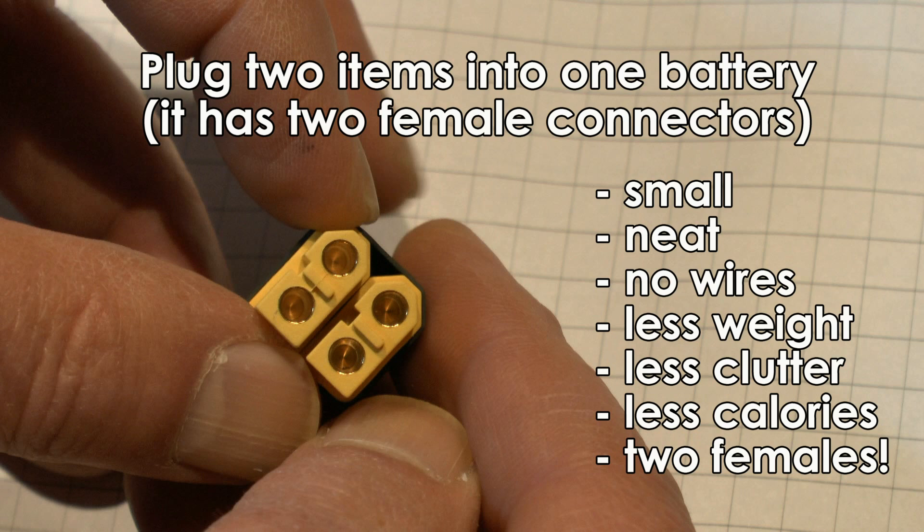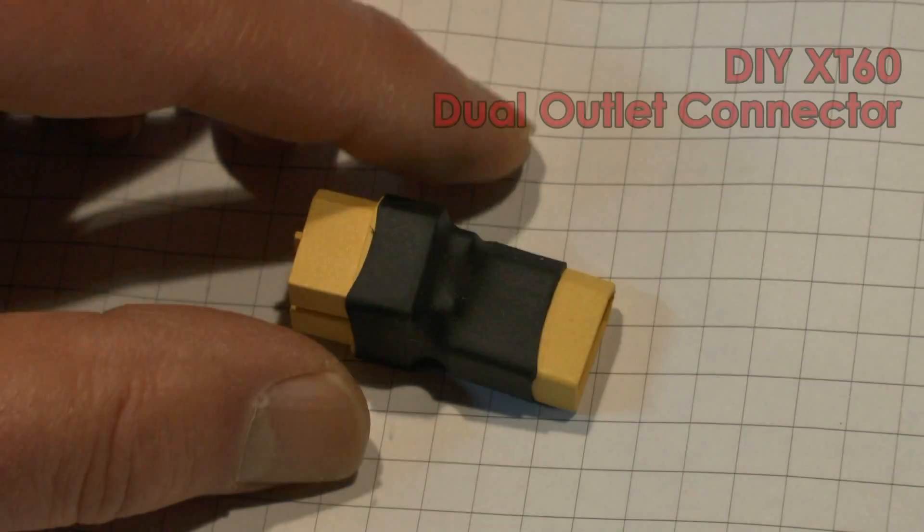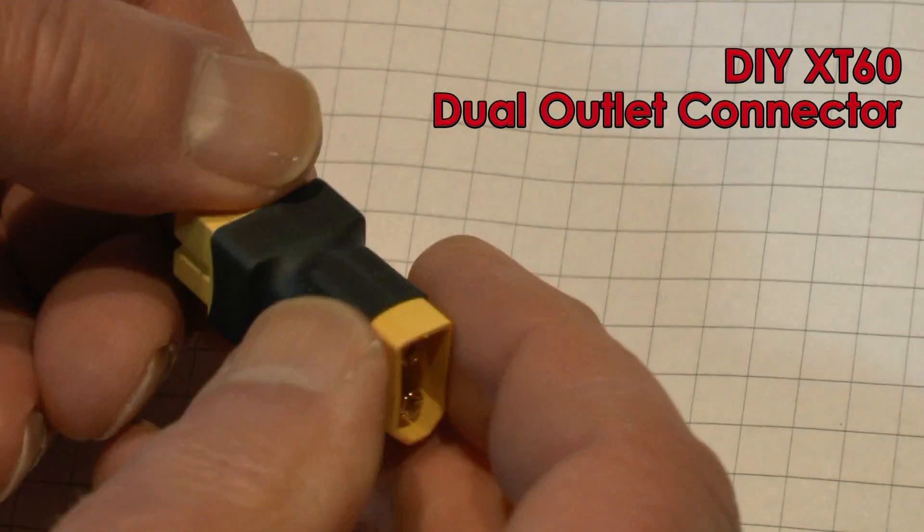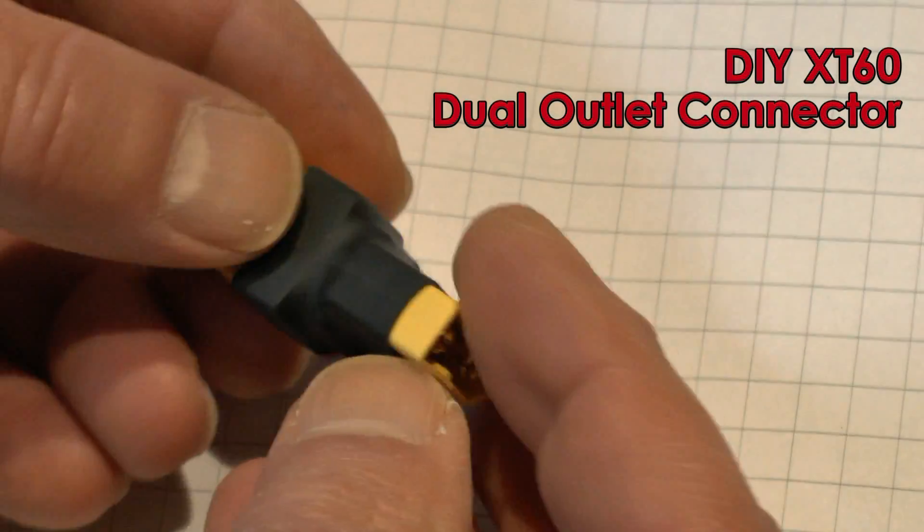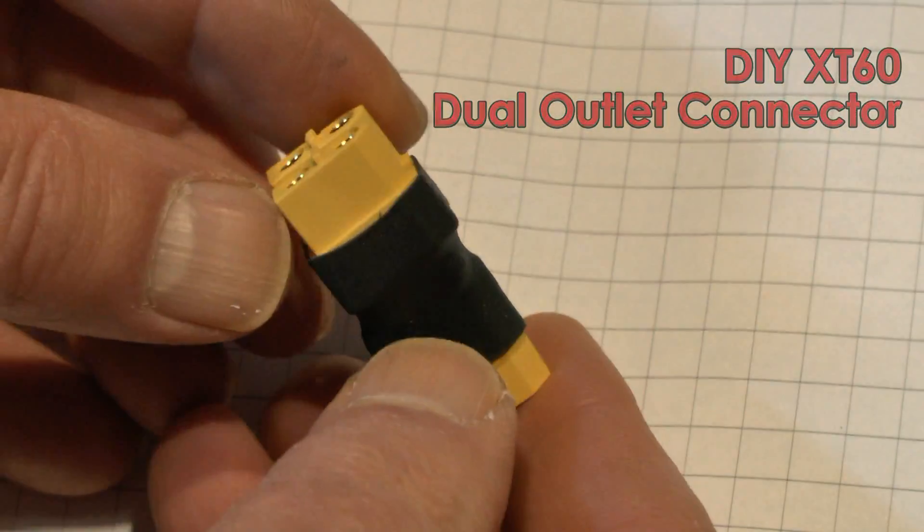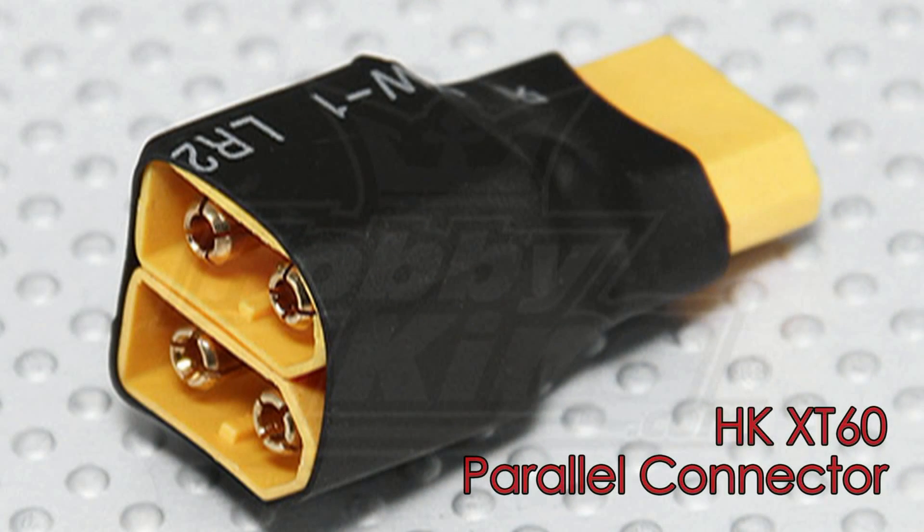I was just going to head out to the bench and make up a dual outlet XT60 connector for some of my FPV gear, and I thought I'd maybe do a video of it since we're not doing any flying anyway. I'll show you a little trick I learned from dissecting one of Hobby King's XT60 parallel connectors.